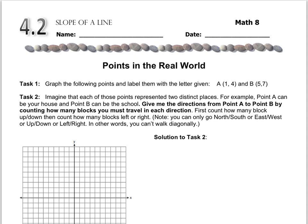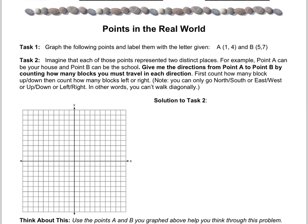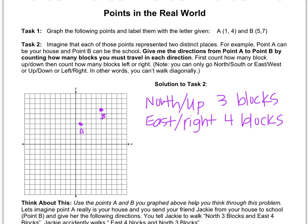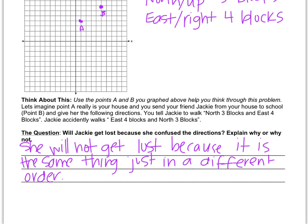In this lesson we're going to look at slope of a line, but before we talk about slope I need you to understand the concept of slope. So I want you to pause the video right now and do this point in the real world story and then when you're all done with it press play and we'll talk about it and move on. All right so I said that you would go north or up three blocks and then east or right four blocks and then down here I said Jackie will not get lost because it's basically the same thing just in a different order.